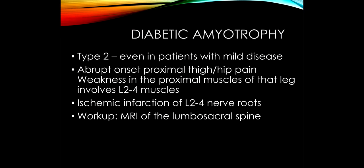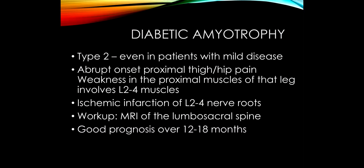If we were to have an ischemic infarction of the L5 and S1 nerve roots — muscles below the knee — the prognosis is not going to be as good because we have a long distance. Over a year to 18 months, patients with diabetic amyotrophy may get entirely back to normal.